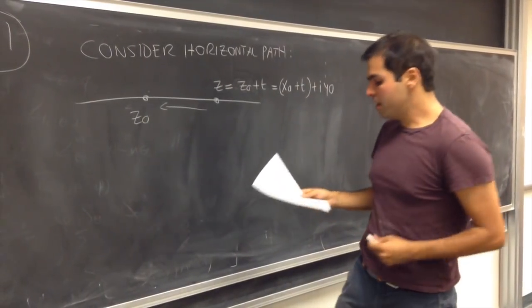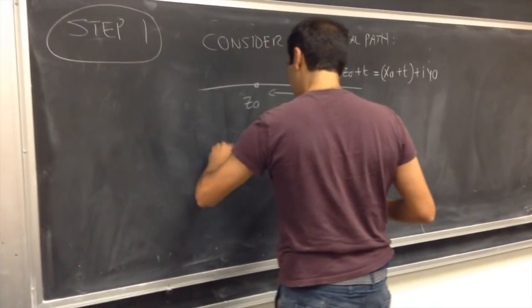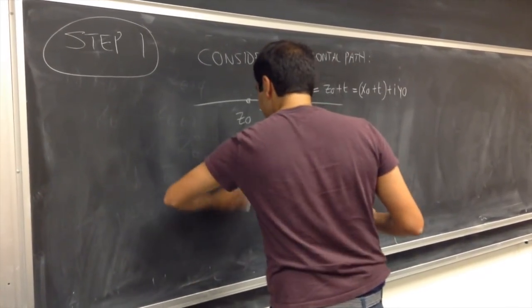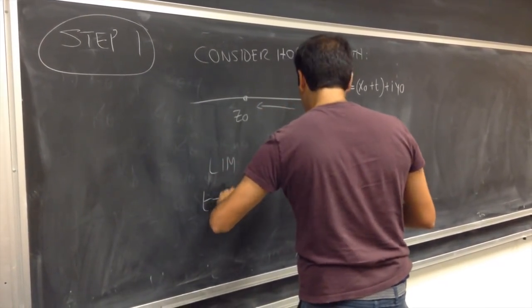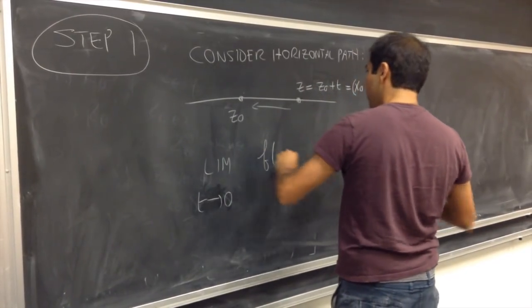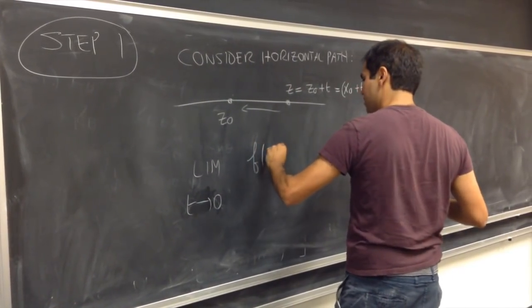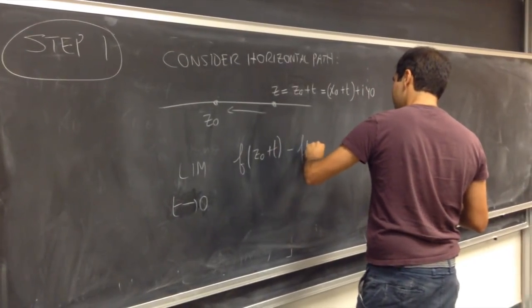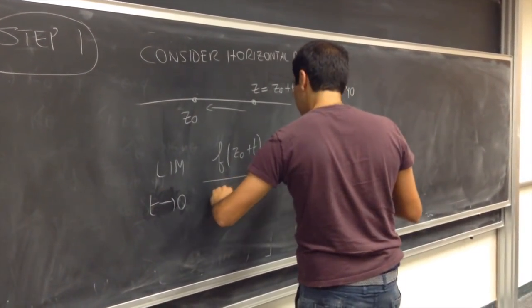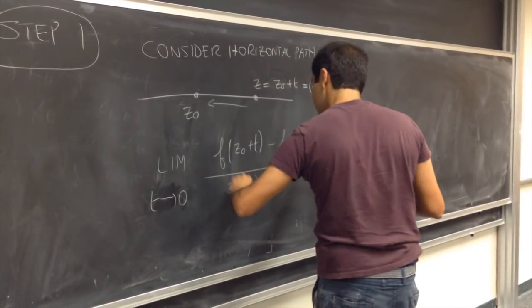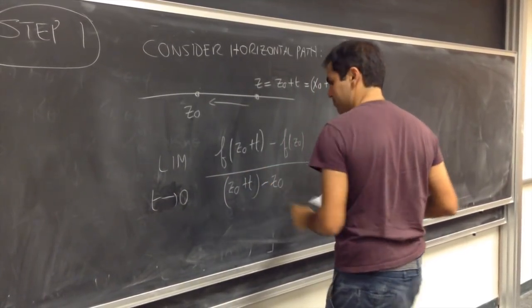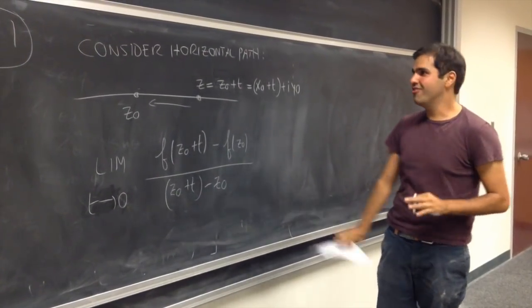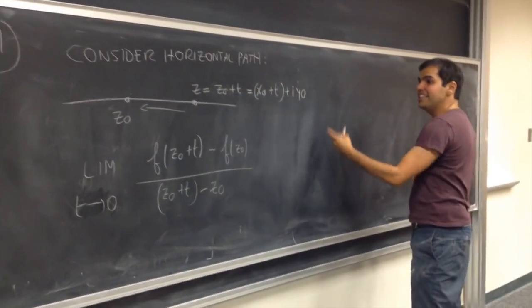Then the limit becomes: limit t goes to zero of f of z-naught plus t, minus f of z-naught, over z-naught plus t minus z-naught. Of course, you can simplify, but let's save that for later.